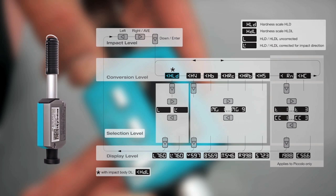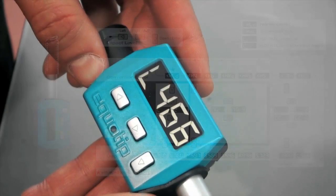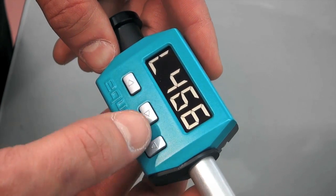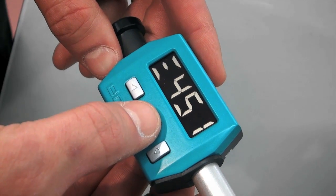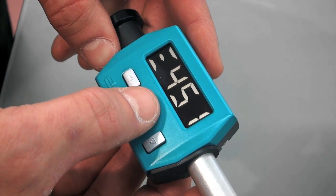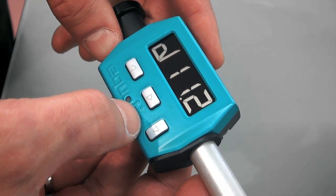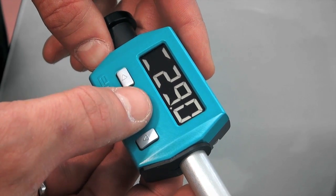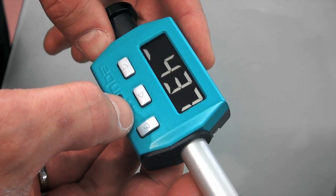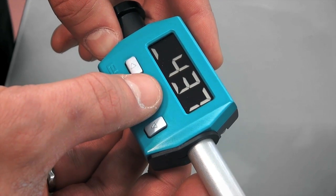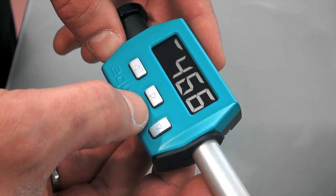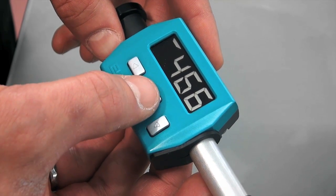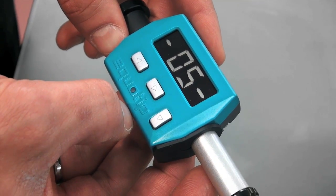To enter the average mode, press the right button. If you need to delete a measurement during a series, press the left key. After the needed number of measurements, press the right key. The display shows average, standard deviation, range, minimum, maximum and other measurement parameters.